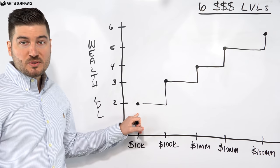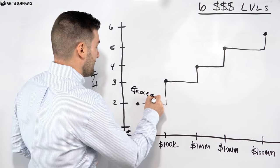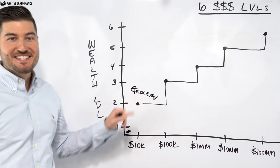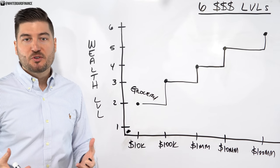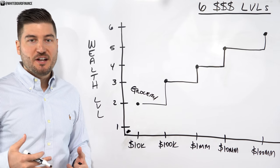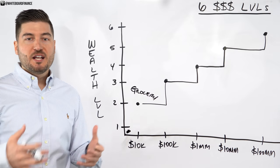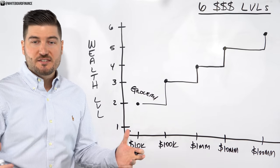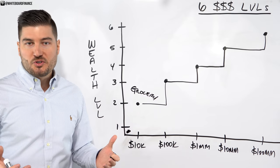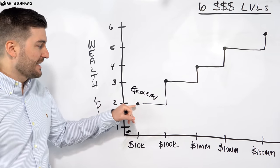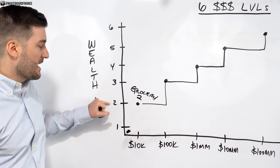But now we start to get into level two, which is what we call grocery freedom. So this is where your net worth allows you to purchase pretty much whatever you want at the grocery store without it affecting your finances. So I'm not talking about buying $100 bottles of wine, but regular everyday items that you can splurge on. So like nicer cheeses, if that's your thing, organic food, etc. Again, a trip to the grocery store is not going to affect your overall financial situation in level two.